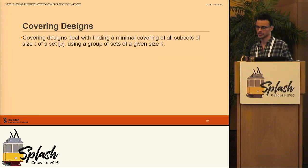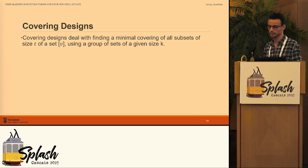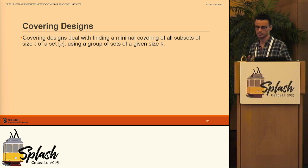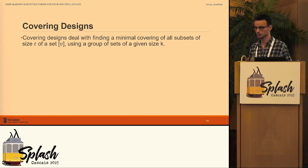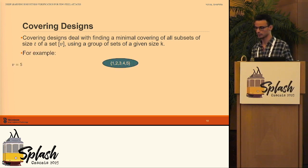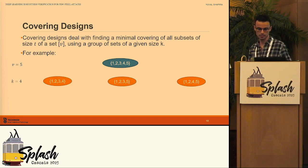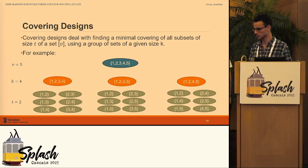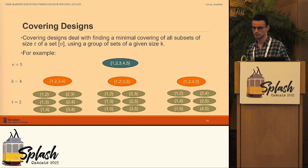To overcome these challenges, we use a combinatorial object called covering designs. Given three parameters V ≥ K ≥ T, covering designs deal with finding a minimal group of subsets of size K of our universe (the numbers 1 through V) such that every subset of size T is contained in at least one of these subsets of size K. For example, if V equals 5, our universe is {1, 2, 3, 4, 5}, and here we have three subsets of size K equals 4 such that every subset of size 2 is contained in at least one of them — these three subsets form a (5, 4, 2) covering design. Finding minimal covering designs for arbitrary parameters is a hard combinatorial problem, but luckily this subject has been well studied.